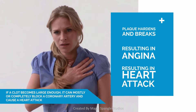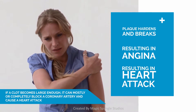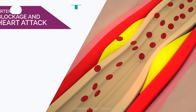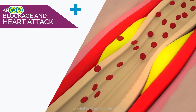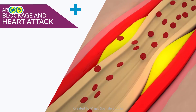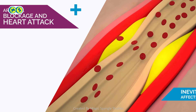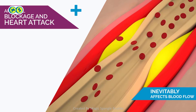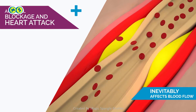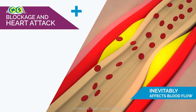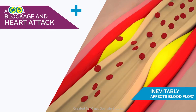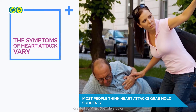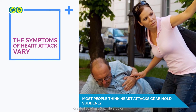Blood clots can further narrow the coronary arteries and worsen angina. If a clot becomes large enough, it can mostly or completely block a coronary artery and cause a heart attack. An arterial blockage is ultimately the build-up of plaque within the artery. This build-up inevitably affects blood flow, bringing with it a number of symptoms that can vary depending on the area in which the blockage is formed.